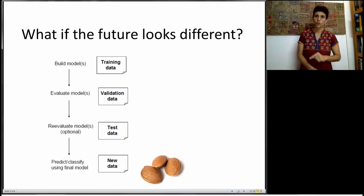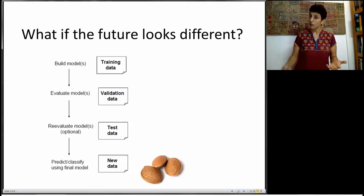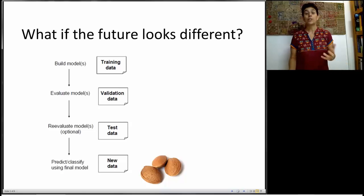So the question is, what happens if that future where we're going to deploy really looks very different? How will the model work? And that's a very valid question, and that could be a big serious problem if we don't take it into account.